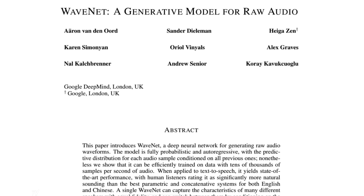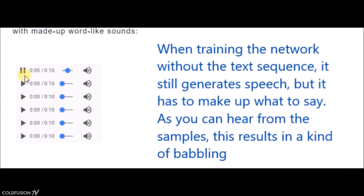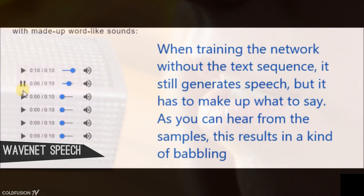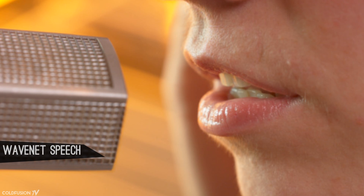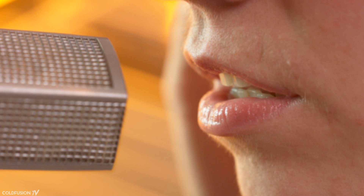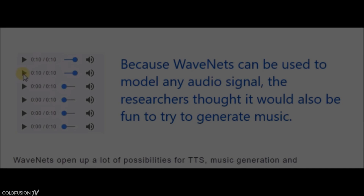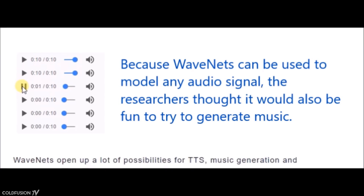Here are some examples. This first example is speech generated by WaveNet with a twist — WaveNet wasn't specified what to say, so it had to make up its own language. Notice the breathing and natural lip sounds. This next clip is some music that WaveNet generated. Again, it wasn't told what to play; there was no musical score — it just played whatever it wanted. For this piece, WaveNet was trained by listening to classical music pieces.